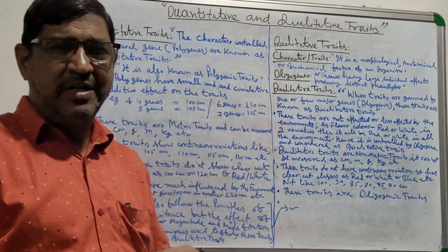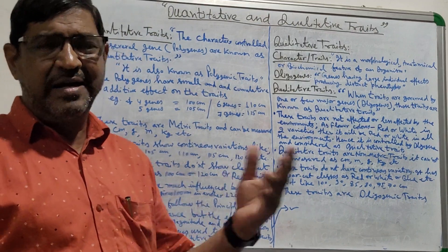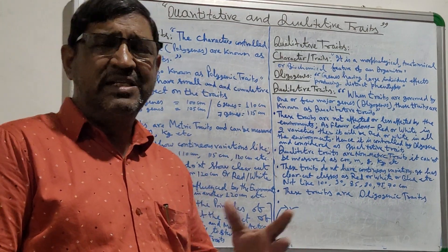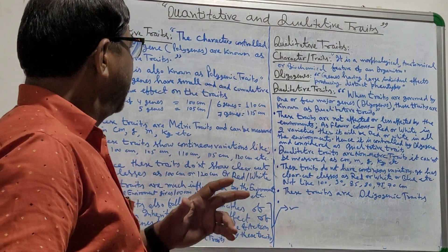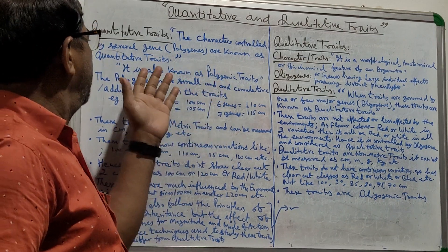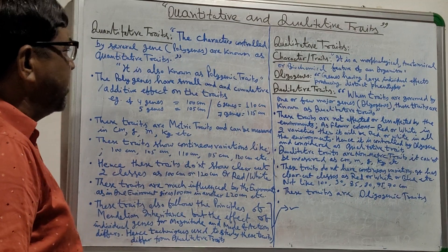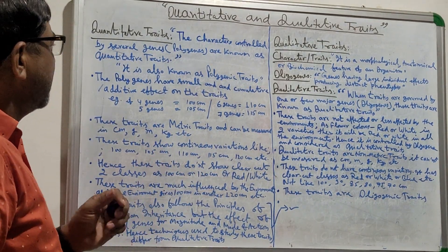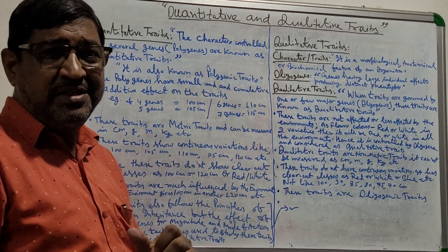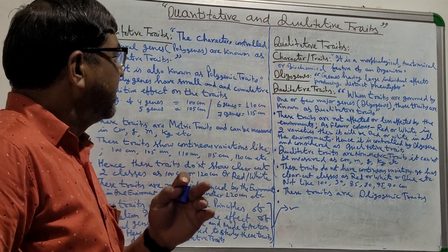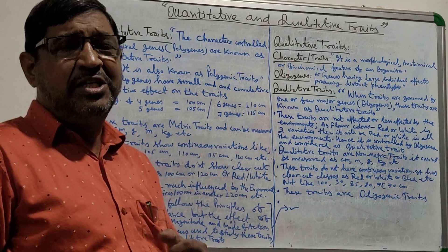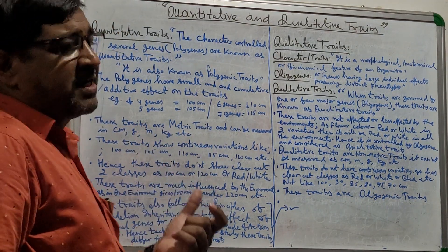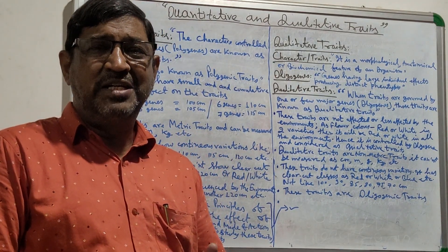Quantitative traits — you already know the characters: whether it is plant height, grain color, grain type, grain shape, grain size, grain length, number of tillers, panicle size. Whatever these traits are, the characters controlled by several genes — polygenes, many genes — are known as quantitative traits.